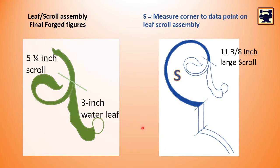The next step is to determine the starting point on the parent stock to ensure that your result matches up to your measurements. The leaf scroll assembly will require a test piece.